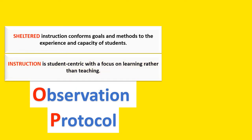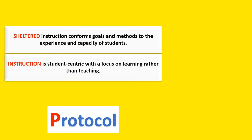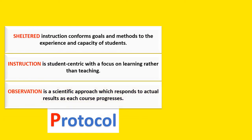Instruction. Instruction in the modern classroom is student-centric, with a focus on learning more than teaching. We'll get into a little more detail on this as we go along. Observation is a scientific approach which responds to actual results as each course progresses. Much like the lab experiments that I did when I was much younger, every new class is an experiment in education. We have to take an observation approach and a scientific approach to achieve not just our goals, but the goals of our students.